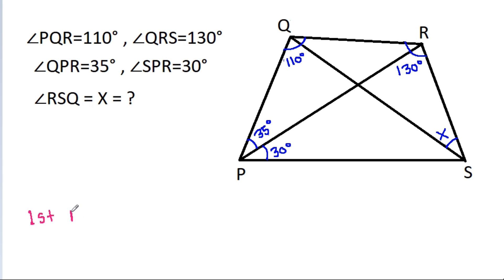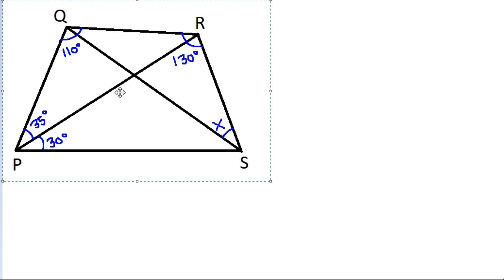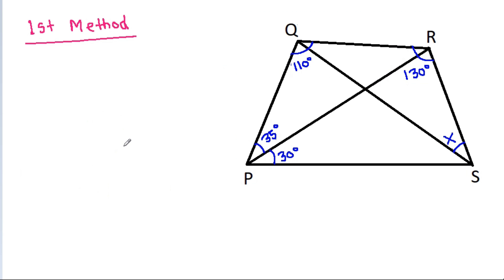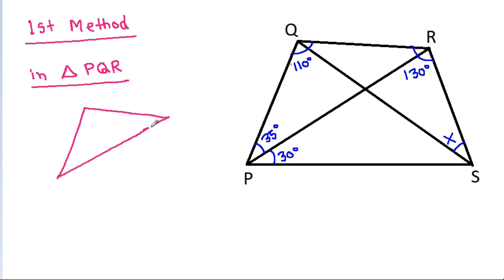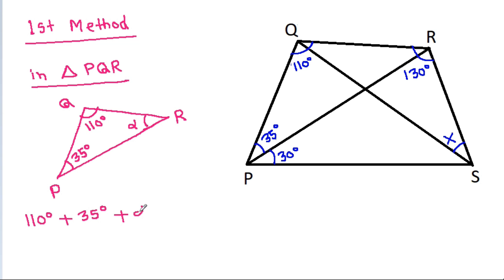So, the first method. In triangle PQR, angle PQR is 110 degrees, angle QPR is 35 degrees, and suppose angle QRP is Alpha. Then 110 degrees plus 35 degrees plus Alpha equals 180 degrees, which means Alpha is equal to 35 degrees.